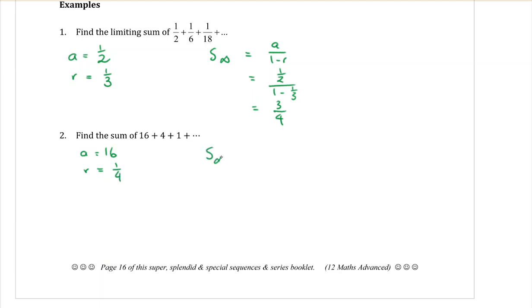And that means the limiting sum. Write the formula down. Subbing in, A is 16, one minus a quarter.